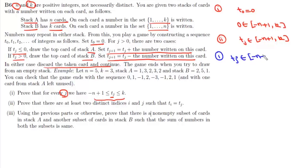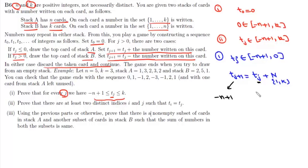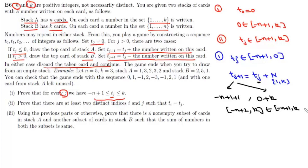Case 1: when T_j lies between -(n-1) and 0. In this case T_{j+1} equals T_j plus the number on the card from stack A, and this number lies between 1 and k. The smallest value of T_{j+1} is when T_j is -(n-1) and the card is +1, giving -(n-2). The maximum value is 0 plus k, giving k. So T_{j+1} lies in [-(n-2), k], which lies within [-(n-1), k], proving our result for this case.